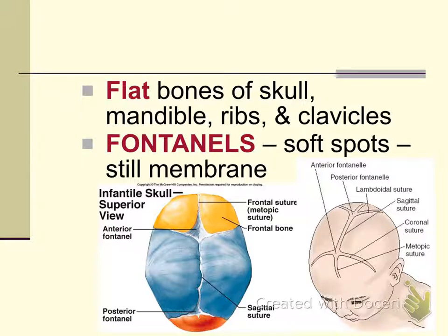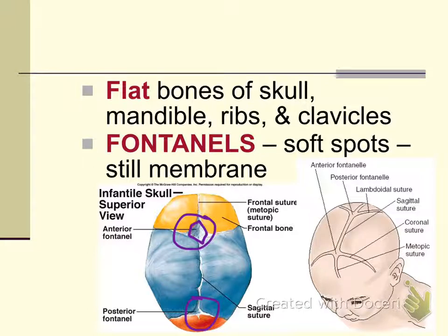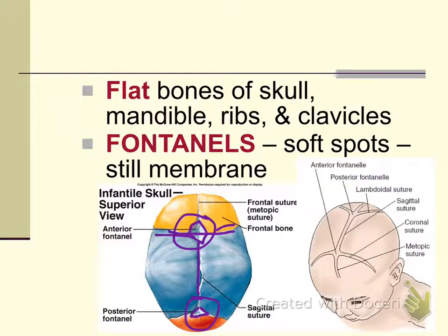Fontanelles are areas of the skull that are still membrane, often called a soft spot. They are where the junction of skull bones meet. The anterior fontanelle is much bigger than the posterior fontanelle, and sutures are where the bones meet. Adults have 206 bones, but infants or embryos have closer to 270 bones because the bones haven't fused yet.